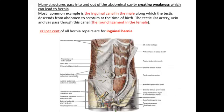Many structures pass into and out of the abdominal cavity, creating weakness which may lead to hernia. The most common example is the inguinal canal in the male, along which the testes descend from the abdomen to the scrotum at birth. The spermatic cord passing through this inguinal canal causes inherent weakness. 80% of all hernia repairs are for inguinal hernia, which will be discussed in detail in coming slides.